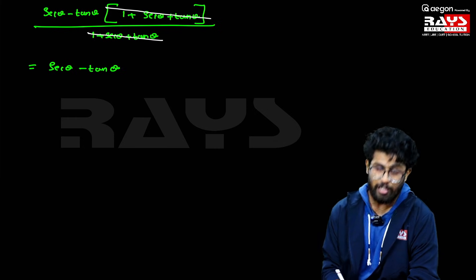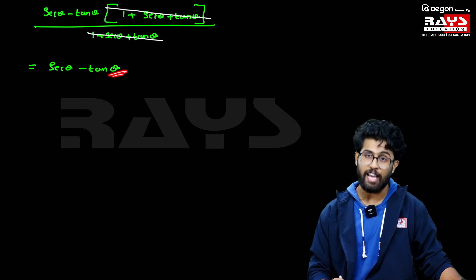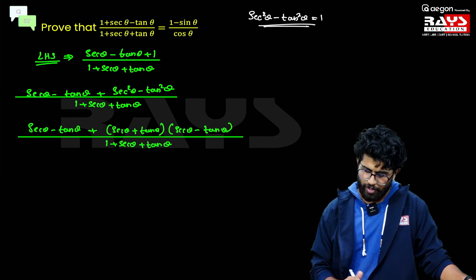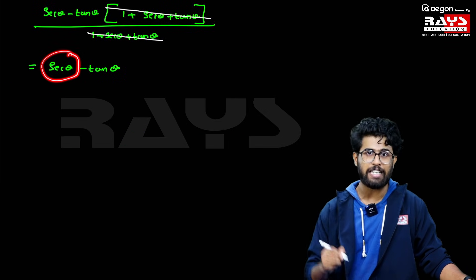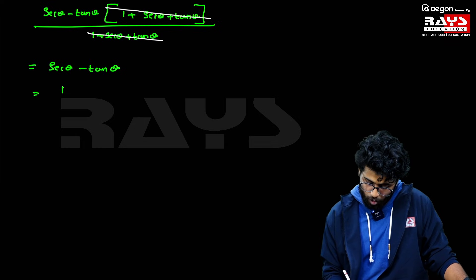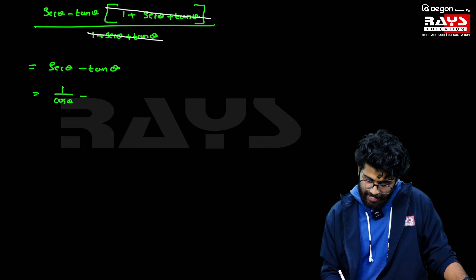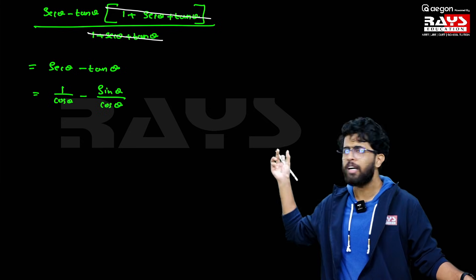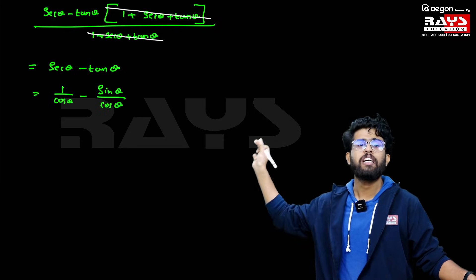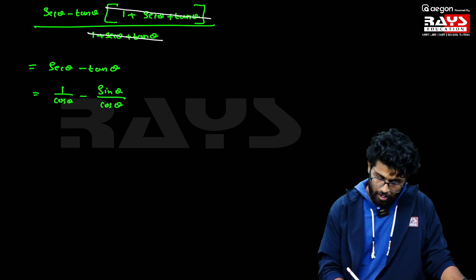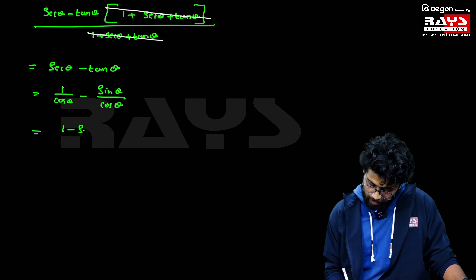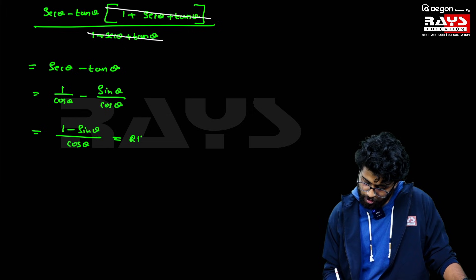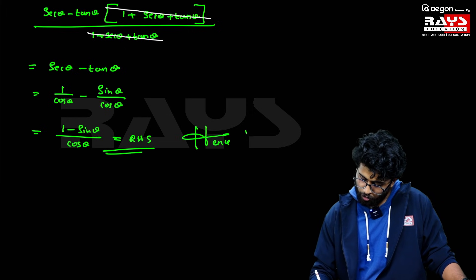That's our result, but it is not the exact RHS. The RHS is in terms of sine and cos, so let's convert: sec θ = 1/cos θ and tan θ = sin θ/cos θ. Since they have equal denominators, we can directly subtract the numerators, giving us (1 − sin θ)/cos θ, which is nothing but the RHS. Hence proved.